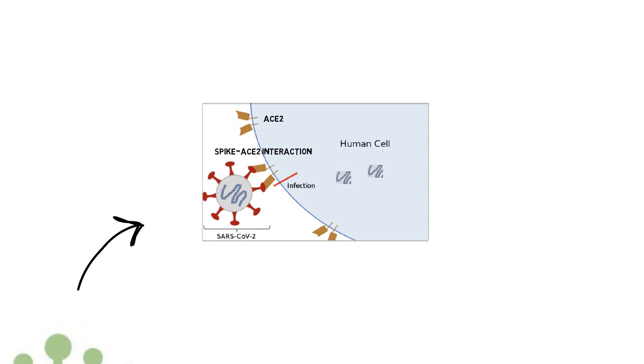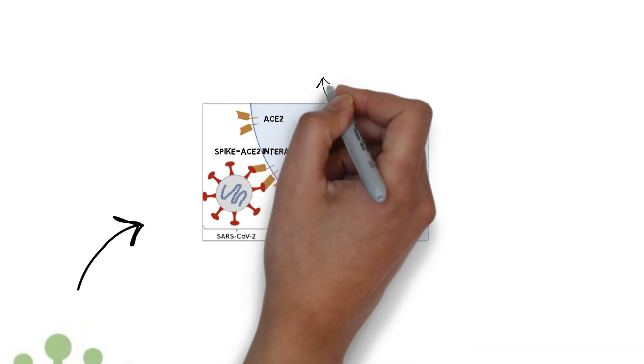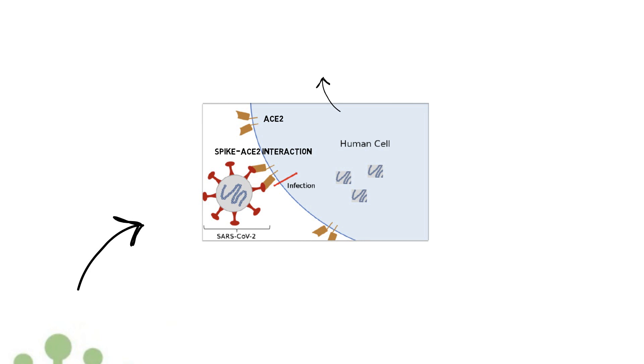Once the virus enters into our cells, this genetic material is released. Viral proteins are made using our cellular machinery and ultimately new SARS-CoV-2 viral particles will bud off from the cell and infect other cells.